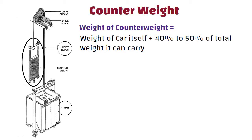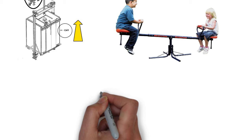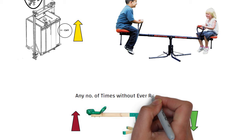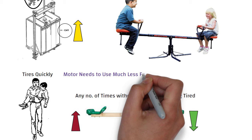You can see in this picture the car is located here. When the elevator car goes up, the counterweight goes down and vice versa, which helps in three ways. The counterweight makes it easier for the motor to raise and lower the car — just as sitting on a seesaw, assuming it is properly balanced, you can bob up and down without ever really getting tired, quite different from lifting someone in your arms. Hence the motor needs to use much less force to move the car either up or down.